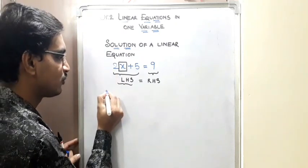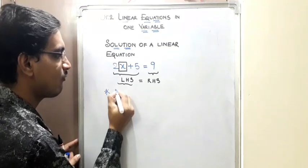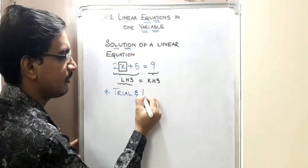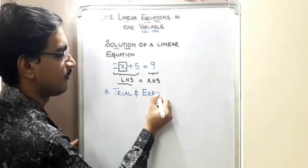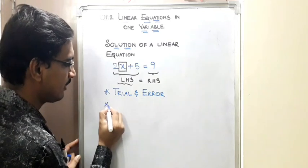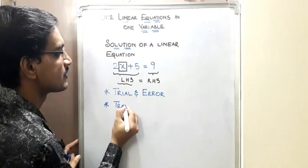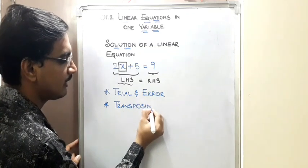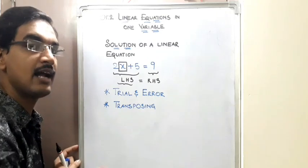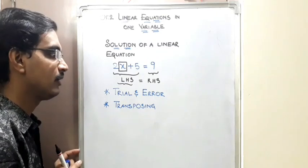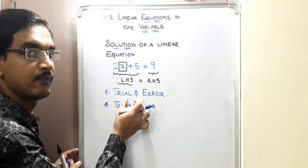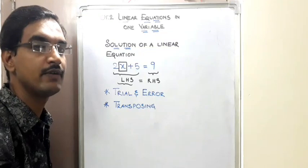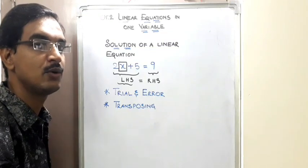In order to find the solution we have two methods. One is the trial and error method and the second one is the method of transposing the terms. As both are methods you have already learned in your previous classes, I will start exercise 2.1 and use both these methods so that you will have a clear picture on how to find the solution of a linear equation.